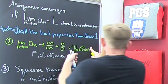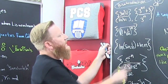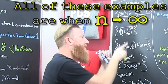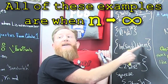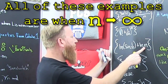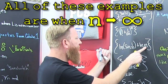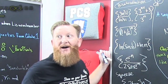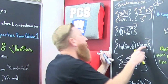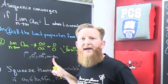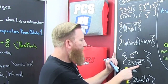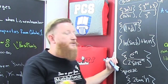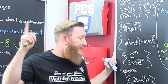You'd use L'Hôpital's on things like 1 to the infinity, or expressions involving square roots. If you have infinity minus infinity, or a natural log form that gives you minus infinity plus infinity, you'd do algebraic operations to rewrite it so you can apply L'Hôpital's. Something that looks like zero over zero — you'd use L'Hôpital's on that too.